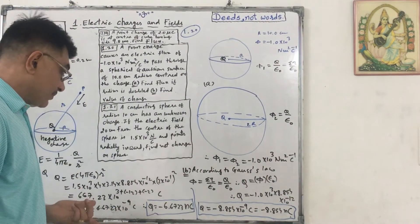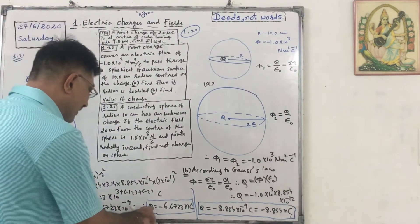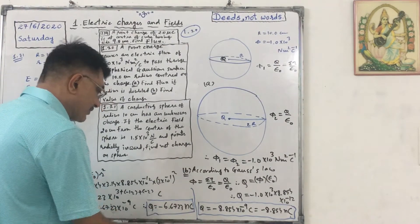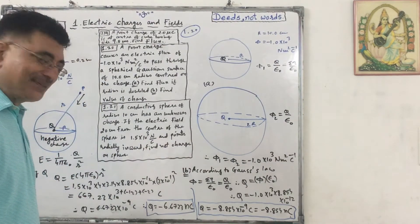But it is negative. So we can write Q equals minus 6.6723 micro coulomb.